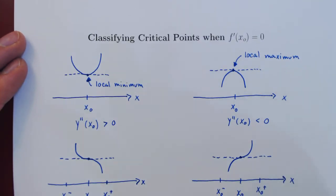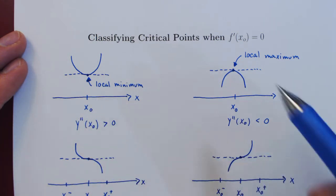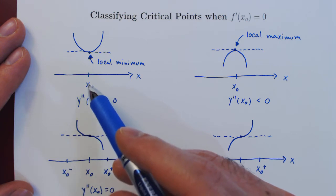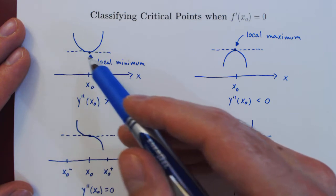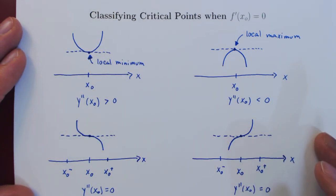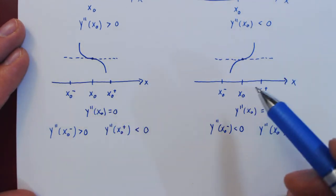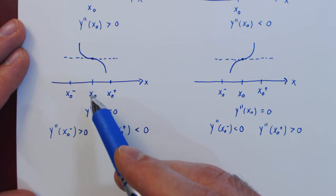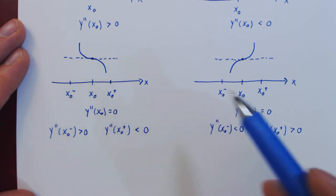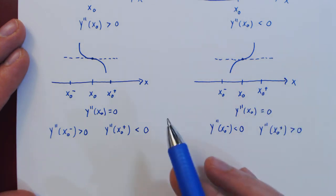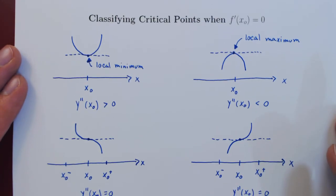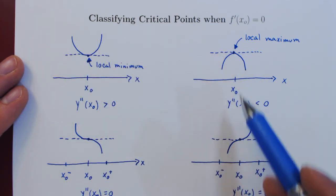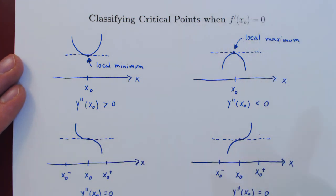This is how you figure out what the graph of a function looks like around a critical point at which the first derivative is equal to zero. The two simpler cases are when the second derivative at the critical point is positive or negative, giving either a local minimum or local maximum. A little more work is required if the second derivative is also zero at the critical point — in that case, use the second derivative at a point a little to the left and a little to the right of x0, which tells you on each side whether the curve is concave up or concave down. This is how you use the second derivative to figure out what the function looks like around any critical point where the derivative equals zero.